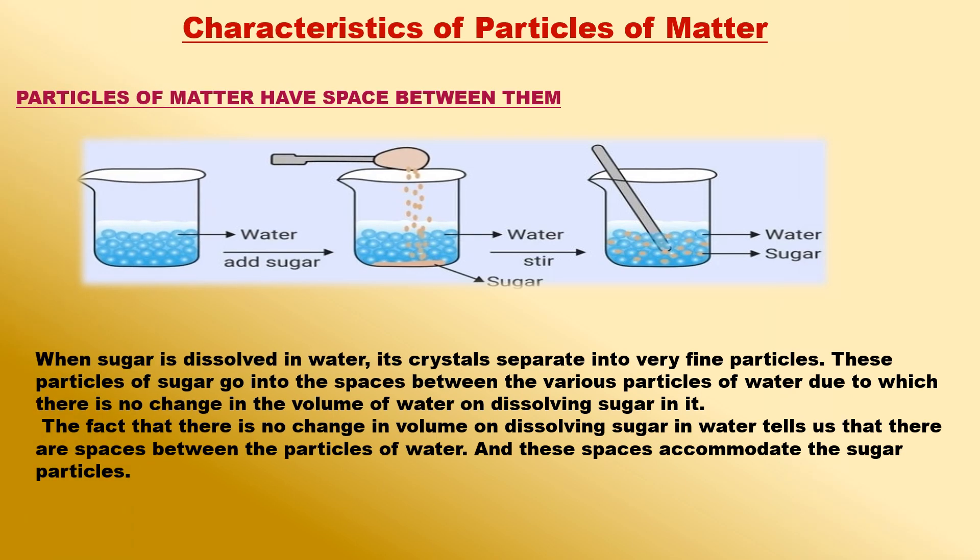Characteristics of particles of matter: the spaces between the particles of matter can be shown by performing the following experiment using water and sugar. We take about 100 ml of water in a beaker. Mark the level of water in the beaker with a marking pen. Also take 50 grams of sugar. Now add 50 grams of sugar to the water in the beaker. Dissolve the sugar by stirring it with a glass rod. When all the sugar has dissolved, we get a sugar solution.